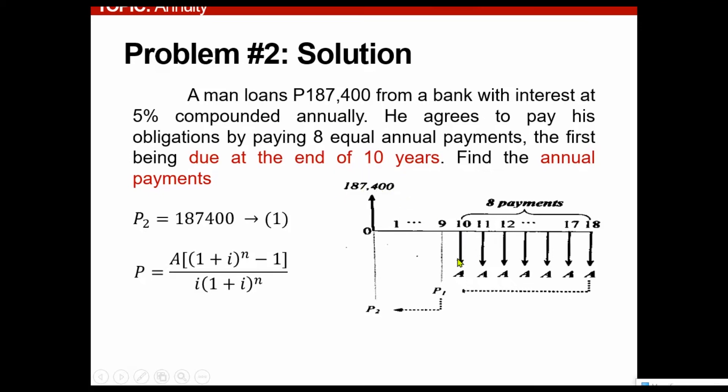And then that means that a man loans $187,400 means that this man owns an amount which is designated as this one. And then the amortization, since we are not owning or giving, since we are paying, that means it will become a downward arrow as just designated in this form. And then as you can see, we have started our annual payment based on this statement. The first being due at the end of 10 years. So meaning we will start at 10 years.